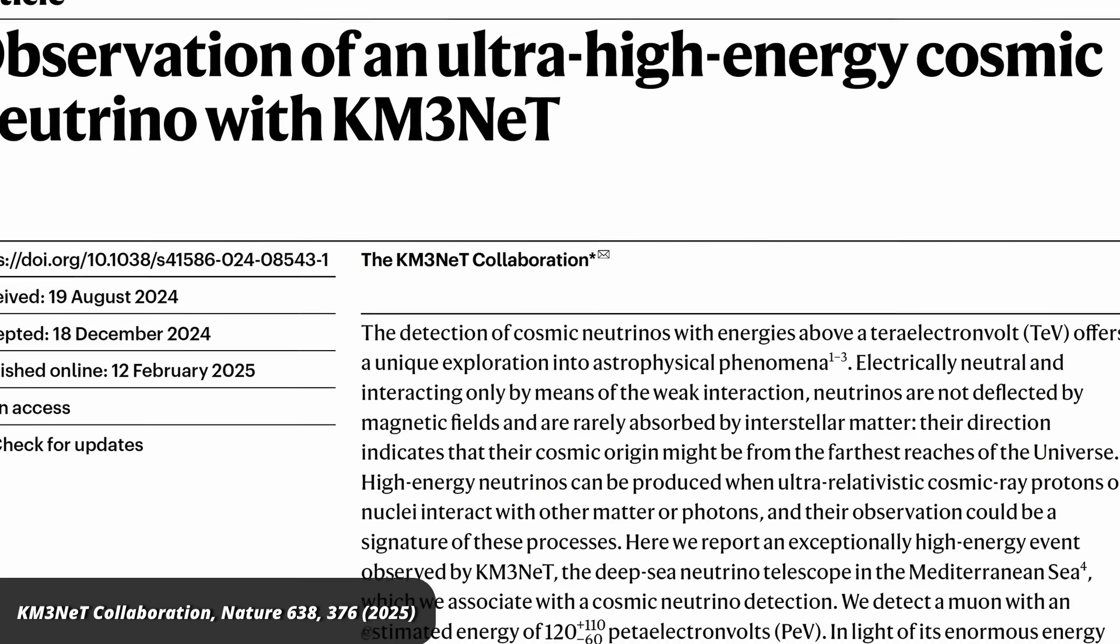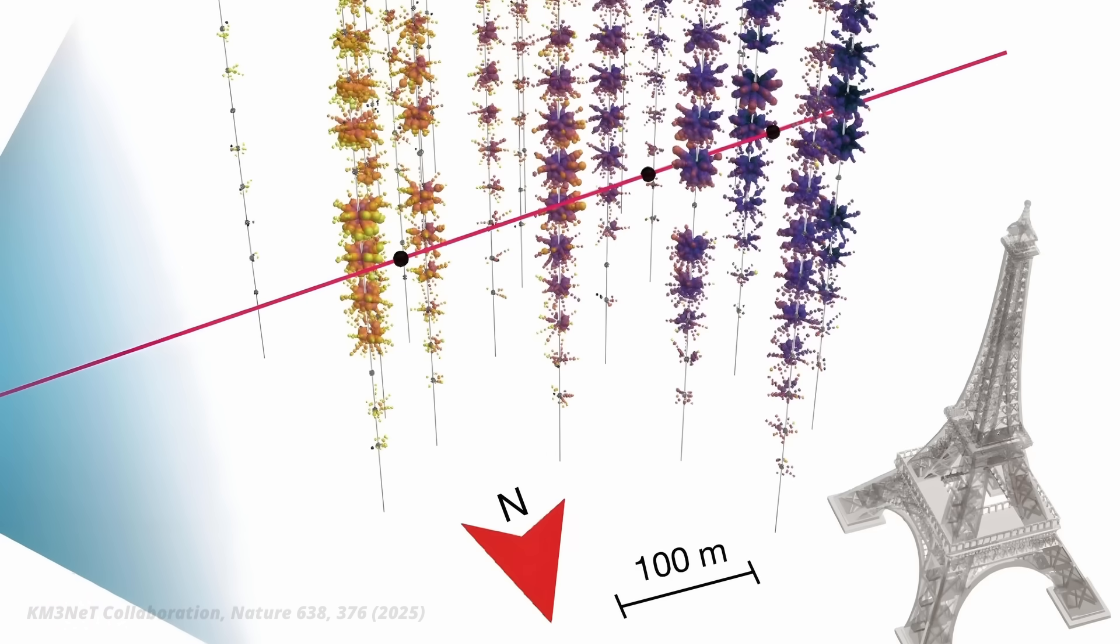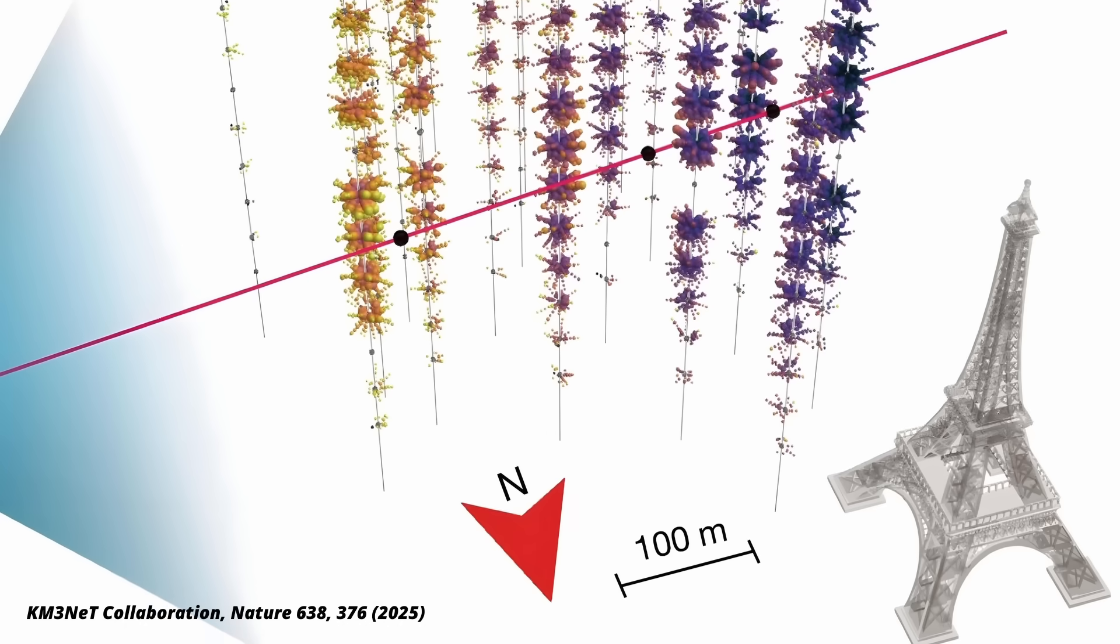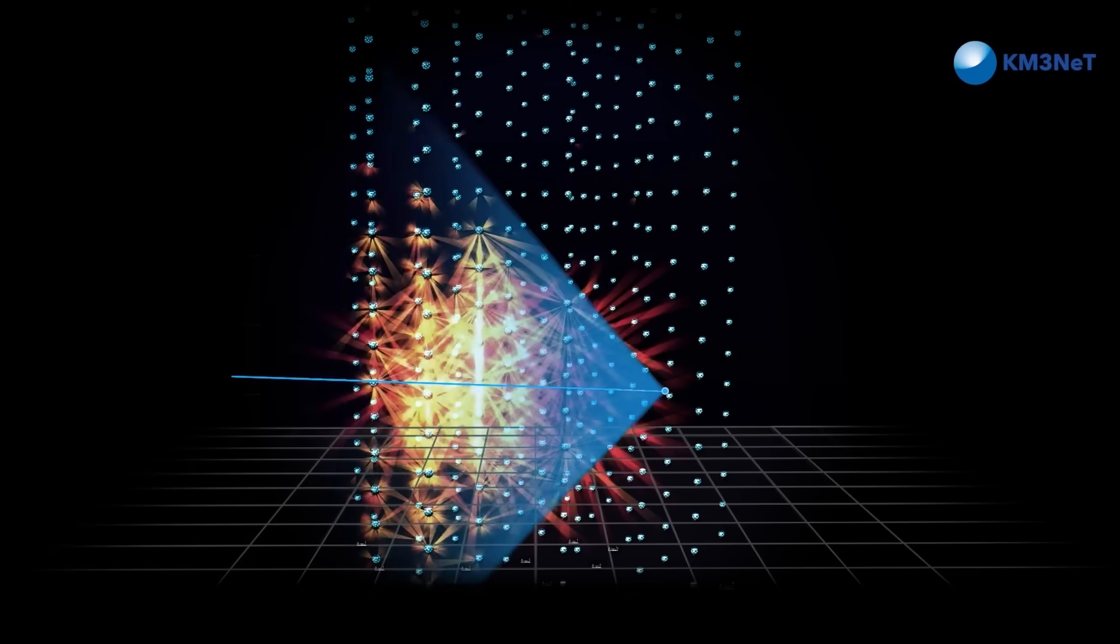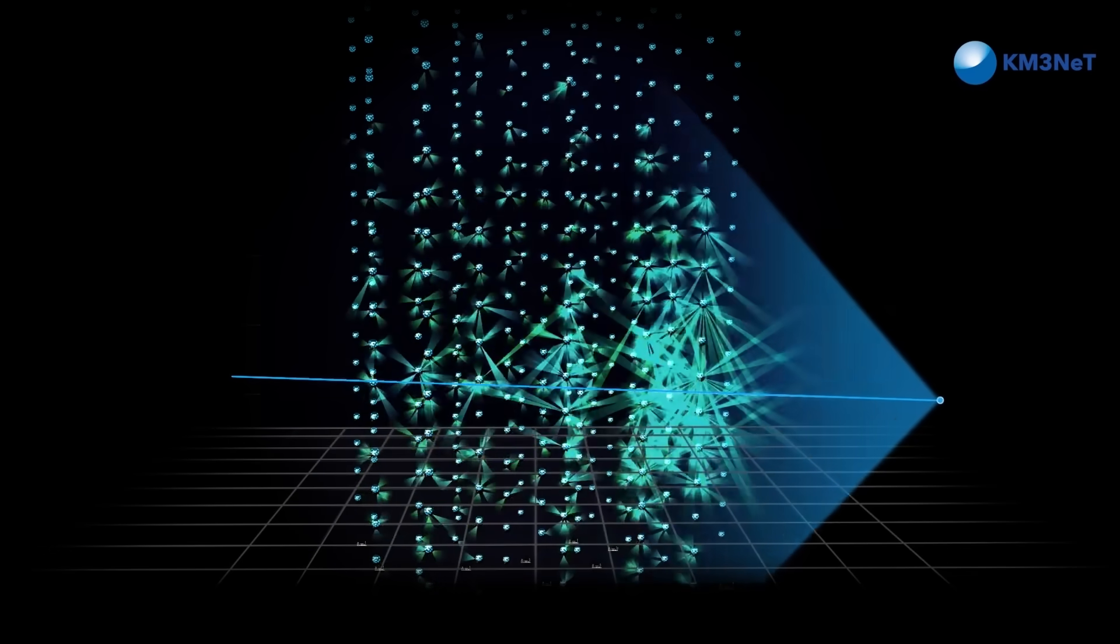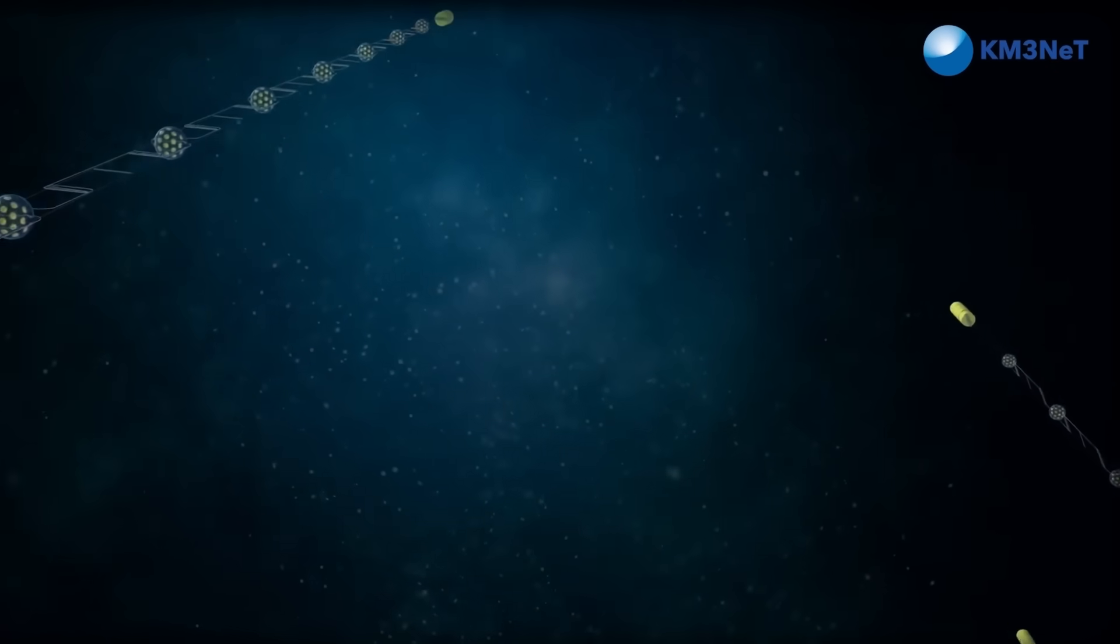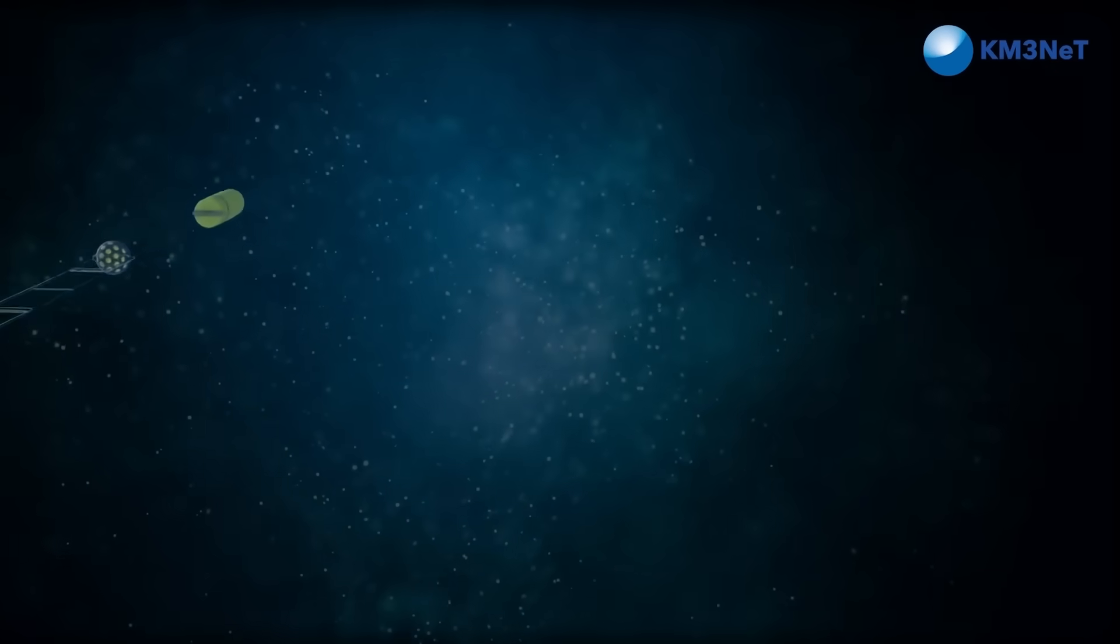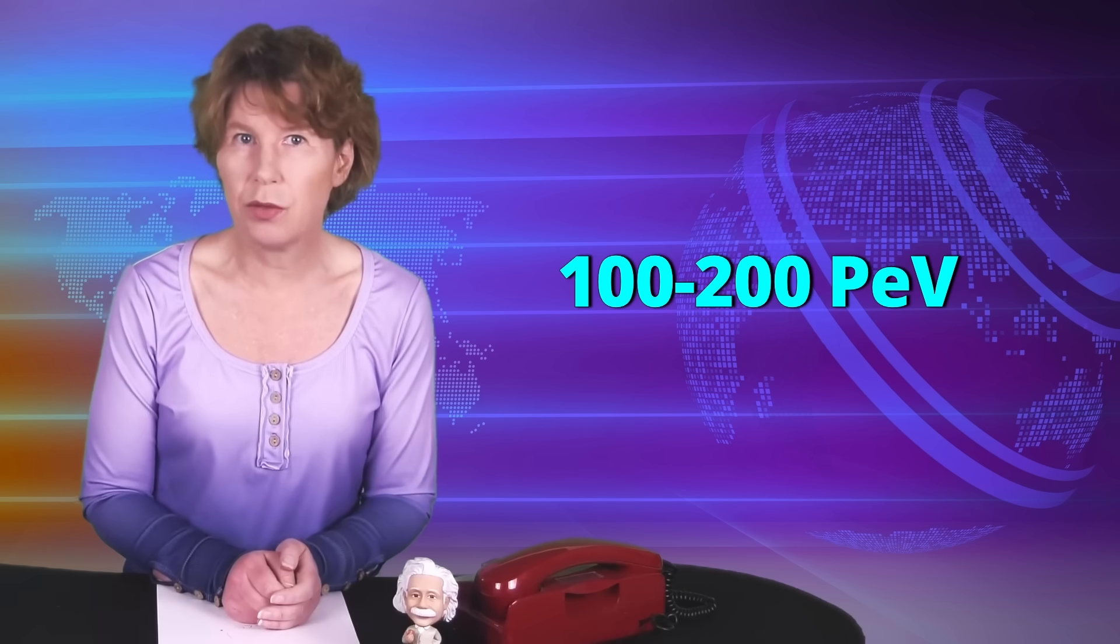Last month, scientists working on the kilometer-cube neutrino telescope reported detection of an ultra-high energy neutrino event. This experiment is a collection of underwater detectors located in the Mediterranean Sea. These detectors hang on ropes like pearls. That way, they can measure what goes on in a large volume. They estimated the energy of this neutrino event to be roughly 100 to 200 peta electron volts.